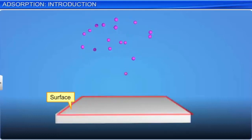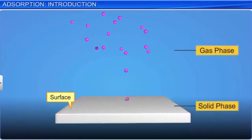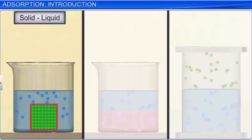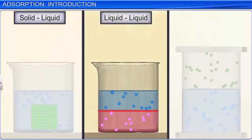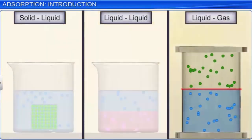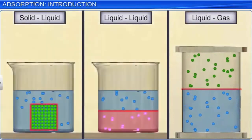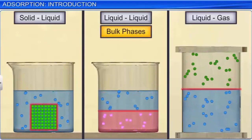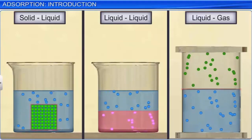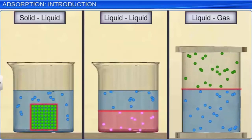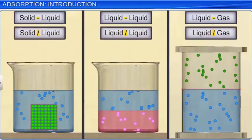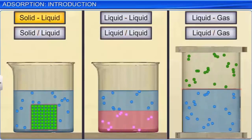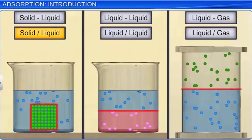An interface is a surface that forms a common boundary between two different phases, such as an insoluble solid and a liquid, two immiscible liquids, or a liquid and an insoluble gas. The two bulk phases refer to the pure compounds or solutions involved in the reaction. The interface is represented by putting a hyphen or slash between the two bulk phases involved, for example, solid-liquid.